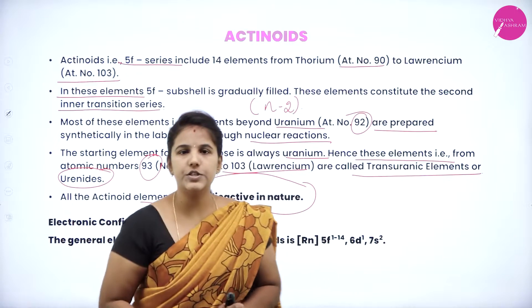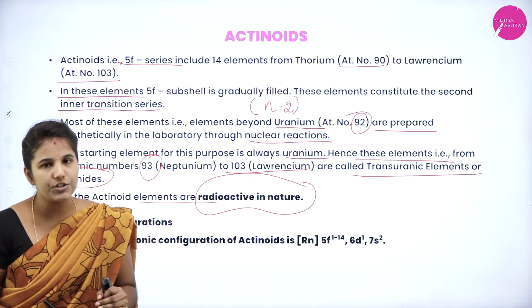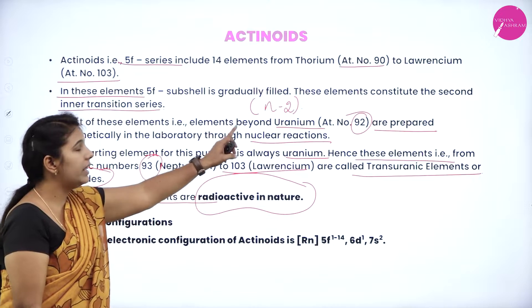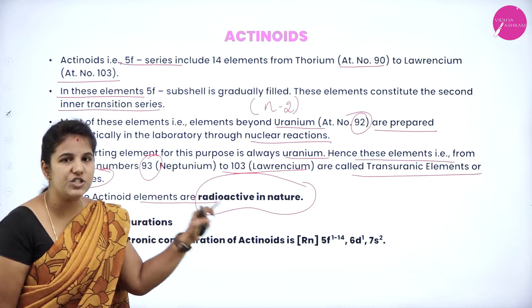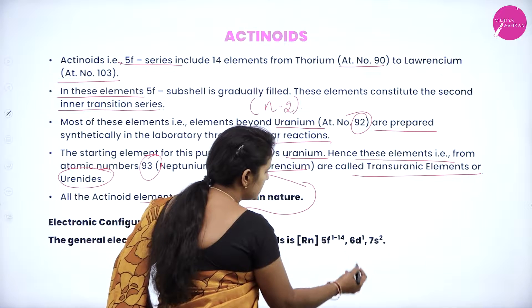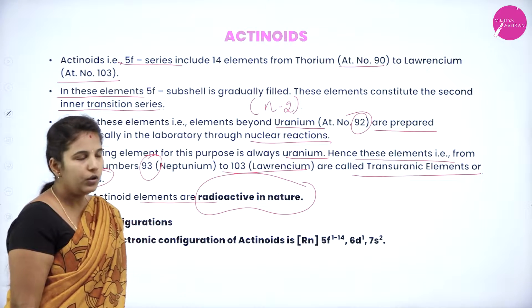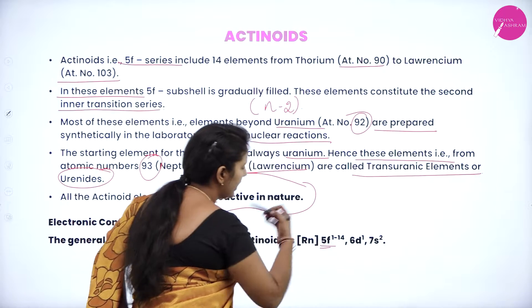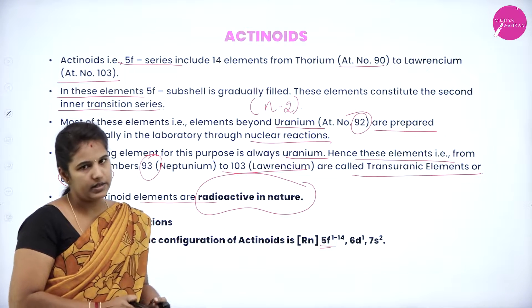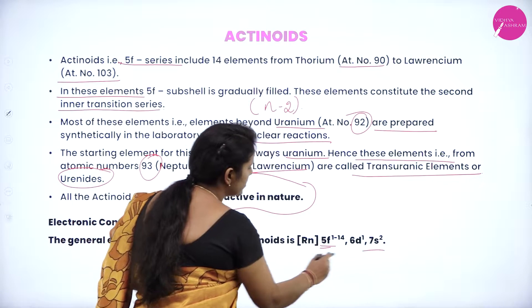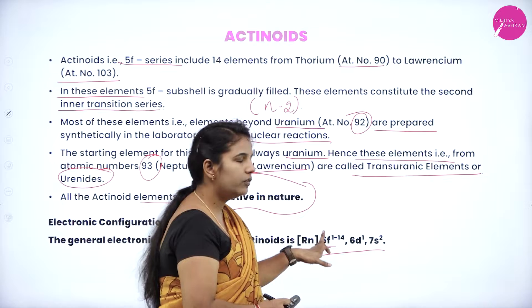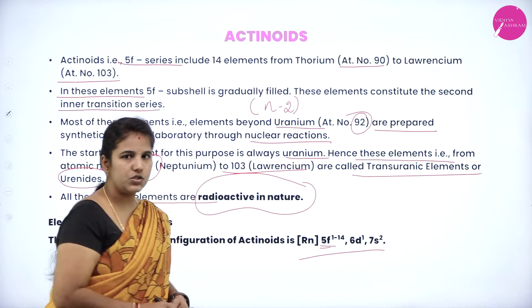Coming to the electronic configuration, the general electronic configuration of the actinide series should be written as Rn 5F 1 to 14, 6D 0 to 1, 7S2. The 5F series is the innermost anti-penultimate shell where the last electron is going to be added. This is the general electronic configuration of the actinide series.